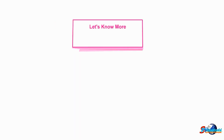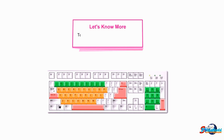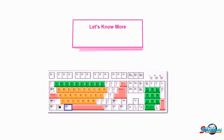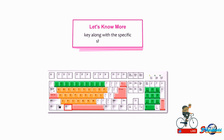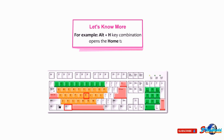Students, let's know more. Pressing the Alt key displays a shortcut key for each tab. To further open any particular tab and its commands, press the Alt key along with the specific shortcut key. For example, the Alt + H key combination opens the Home tab.